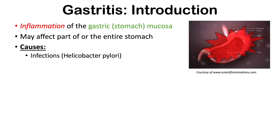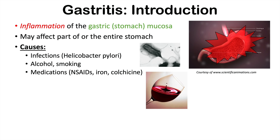Alcohol and smoking can also lead to gastritis. Certain medications like non-steroidal anti-inflammatories or NSAIDs, like ibuprofen, if used for a long period of time, can lead to stomach inflammation. We can also see it with iron supplements and colchicine, which is a gout medication. Gastroesophageal reflux disease — persistent chronic GERD — can lead to erosive gastritis.